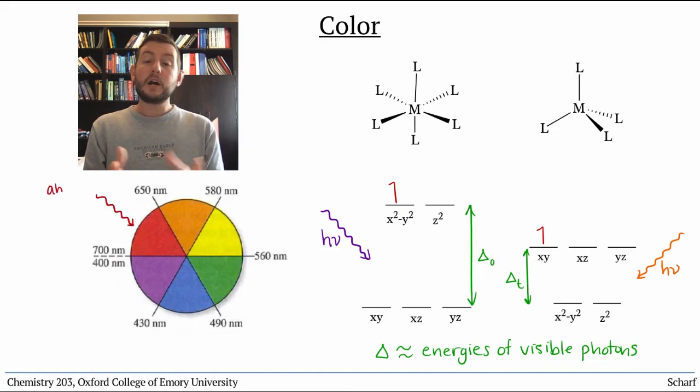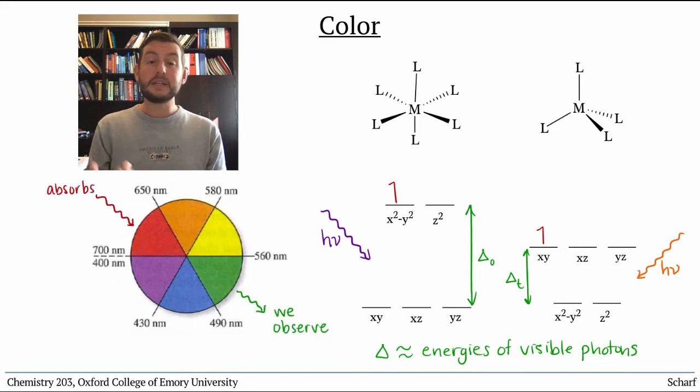When a complex absorbs a particular wavelength of light, that means we see its complementary color. We use a color wheel to help us identify observed colors. Since ligand field strength directly impacts the energy gap between d orbitals, it also impacts the wavelengths of light that are absorbed.